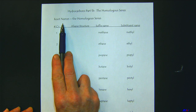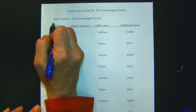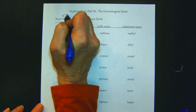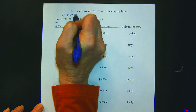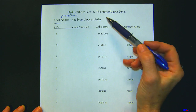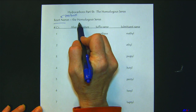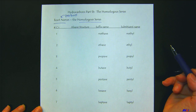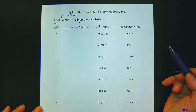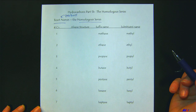As we begin learning how to name organic compounds, we need to know the root or the parent name, and this will be the longest carbon chain in our molecule. This group of names is referred to as the homologous series, and it builds on those Greek prefixes that you learned when learning how to name binary covalent compounds.